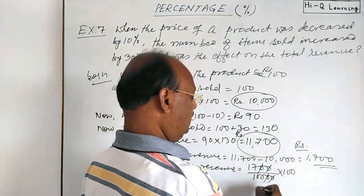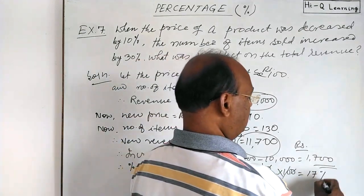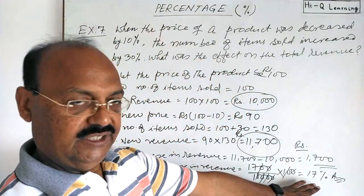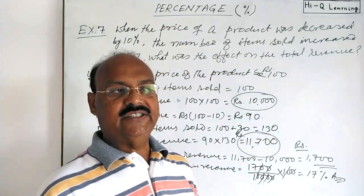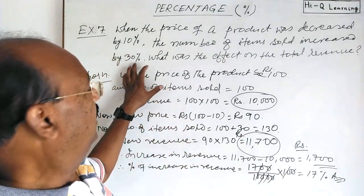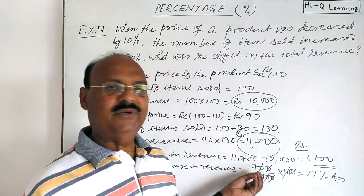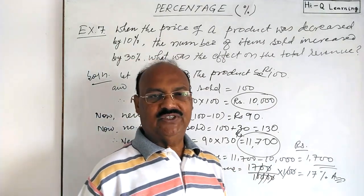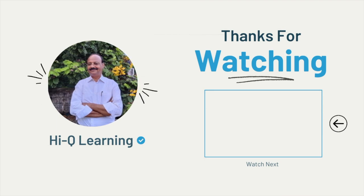After simplifying, the two zeros cancel out, and we get the final answer: 17 percent is the increase in total revenue when the cost of the product is decreased by 10 percent and number of sales increases by 30 percent. Students, you need a little bit of practice to have command over it. Thank you very much for watching this video, and wish you all the best.